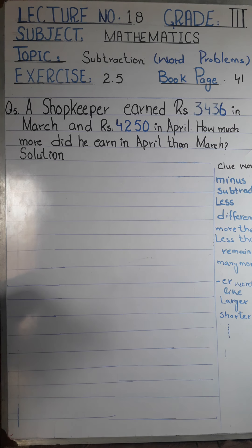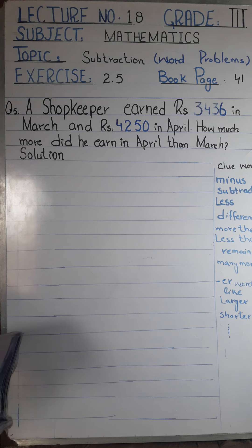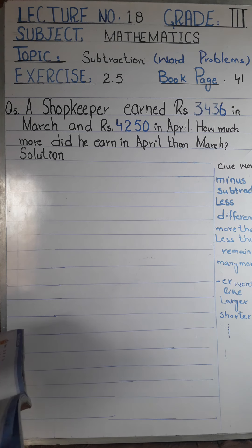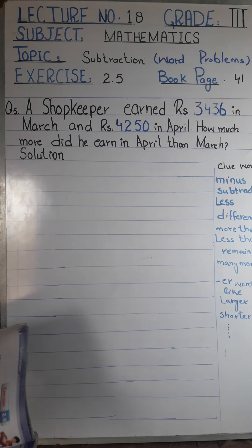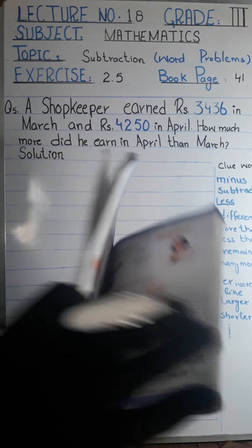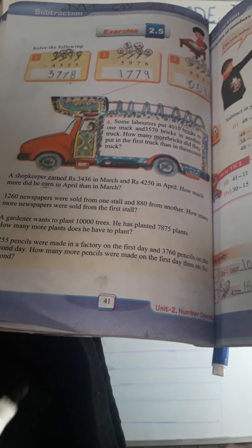Today, students, we will solve the questions of Exercise 2.5, book page 41. Again, it is words problems. We follow the same method as the previous exercise, Exercise 2.4. Open your books to page 41.